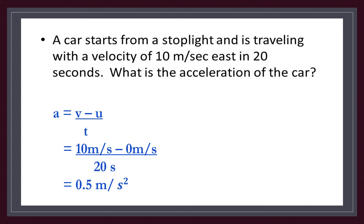Problem: a car starts from a stoplight and reaches a velocity of 10 meters per second east in 20 seconds. What is the acceleration? Using a equals (v minus u) over t, with final velocity 10 m/s and initial velocity zero, we get acceleration equals 0.5 meters per second squared.